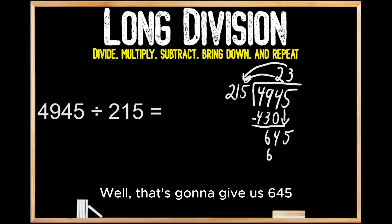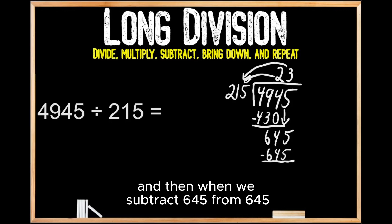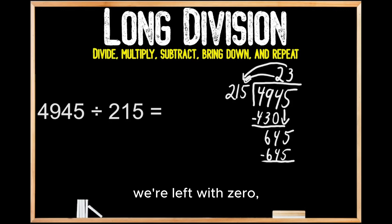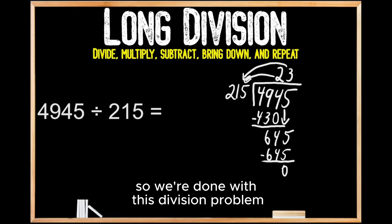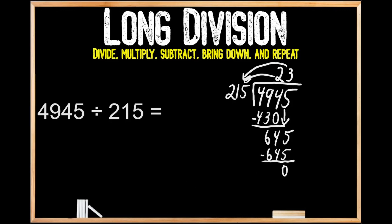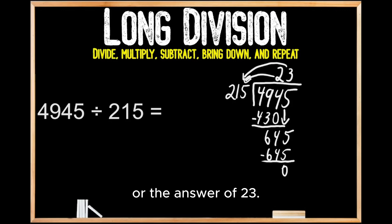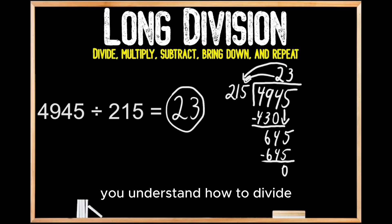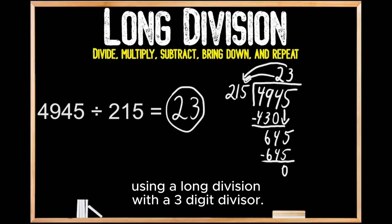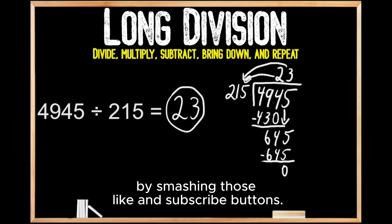That gives us 645, so we write that down below. When we subtract 645 from 645, we're left with 0. We're done with this division problem because we're left with 0 and we don't have any more numbers to bring down. So when we divide 4,945 by 215, we get the quotient, or the answer, of 23. Hopefully you now understand how to divide using long division with a three-digit divisor. Help make math less complicated by smashing those like and subscribe buttons.